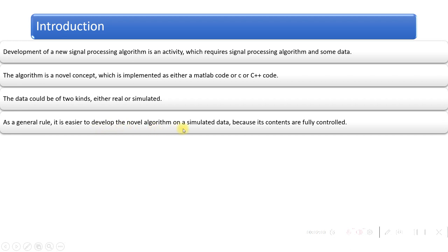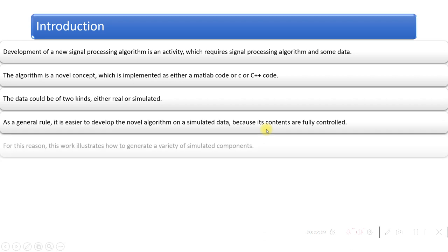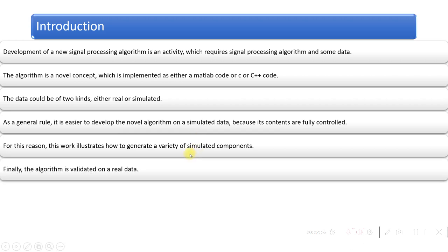As a general rule, it is easier to develop a novel algorithm on simulated data because its contents are fully controlled. For this reason, this work illustrates how to generate a variety of simulated components. Finally, the algorithm is validated on real data once it has been completed using simulated data.